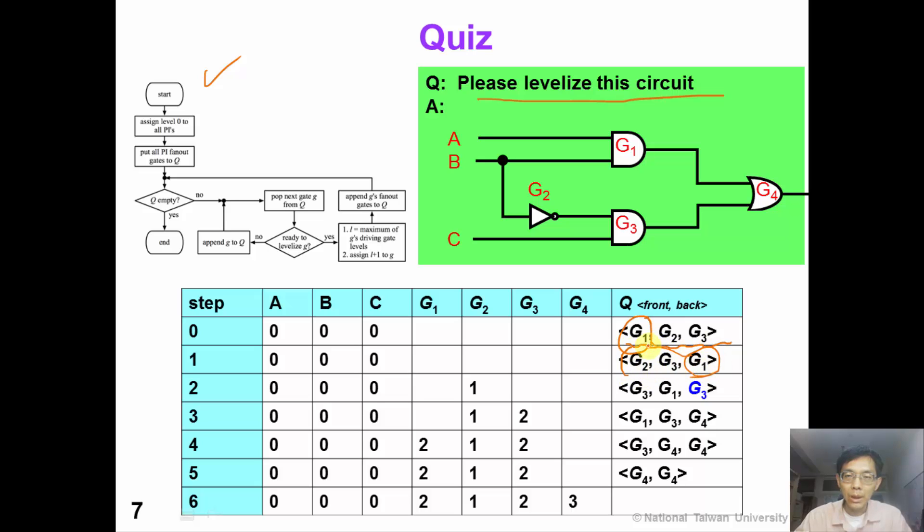And then we pop out G2. G2 is now ready for levelization. So G2 is level 1. And then we append G2's fanout, which is G3, back to the queue. Please don't forget this G3.